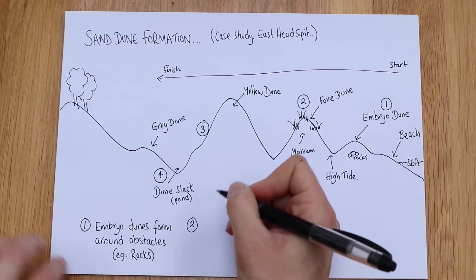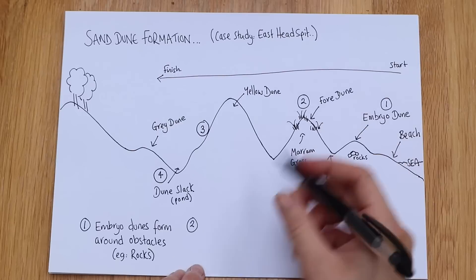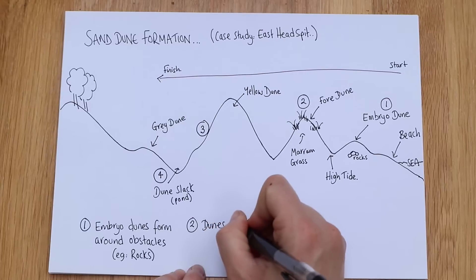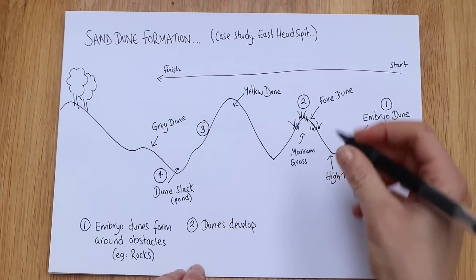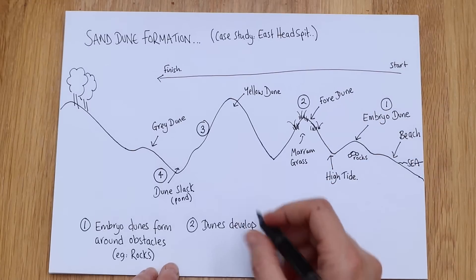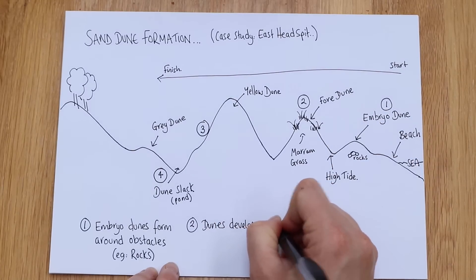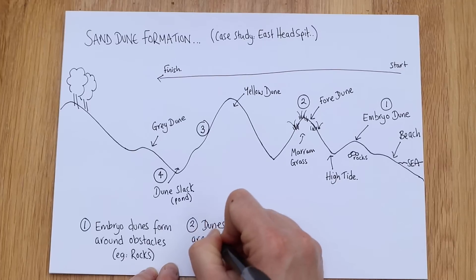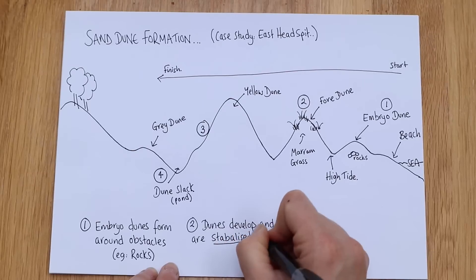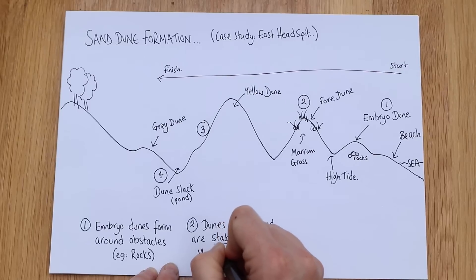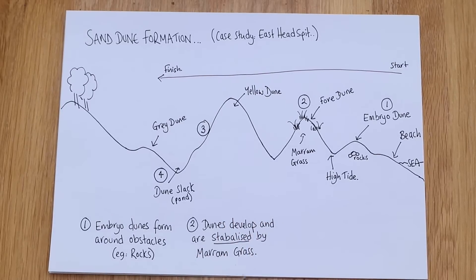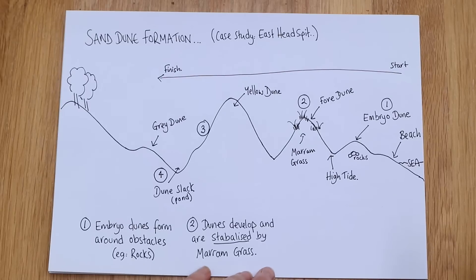Number two is here, isn't it? It's our fore dunes. It's actually a proper dune, so we can put there dunes develop. And remember they would just get blown away if they didn't have this marram grass, so we need to put that in there. We need to say dunes develop and are stabilized, that's a key word, by marram grass. Now if you forgot the name of the grass in the exam that wouldn't be the end of the world, but do remember to talk about these grasses.